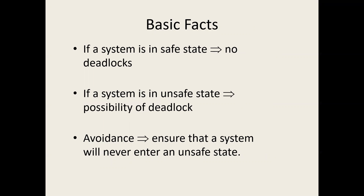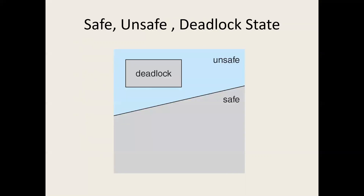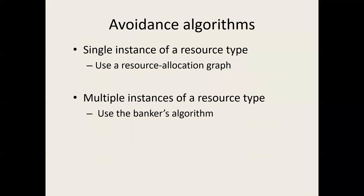The basic facts are: if the system is in a safe state, there is no deadlock. If the system is in an unsafe state, there is a possibility of a deadlock — an unsafe state does not necessarily mean a deadlock. If all states are unsafe, then there is a deadlock. In avoidance, we ensure the system never enters an unsafe state. Safe state means no deadlock; unsafe states mean a possibility; if all states are unsafe, there is a deadlock.